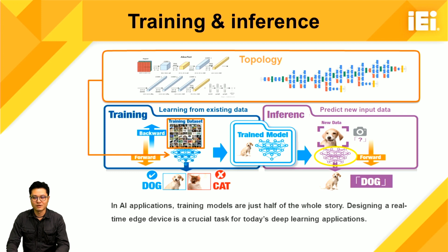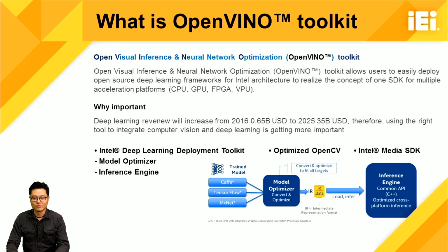The technology of training is almost well established in today's industry, but how to complete the inference process is the most important task today. OpenVINO stands for Open Visual Inference and Neural Network Optimization. It's an Intel open-source SDK that can convert popular frameworks for Intel acceleration hardware. The heterogeneous plugin allows it to work across different acceleration platforms such as CPU, GPU, FPGA, and VPU. It also includes a model optimizer to convert pre-trained models from different frameworks to Intel format, and an inference engine — a C++ API for coding inference applications — as well as optimized OpenCV and Intel Media SDK for decode work.